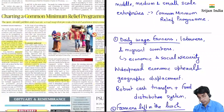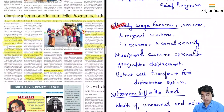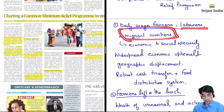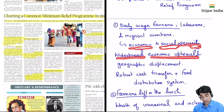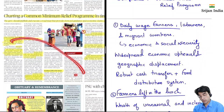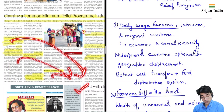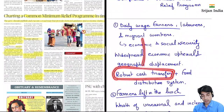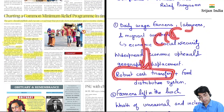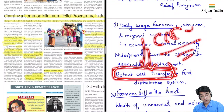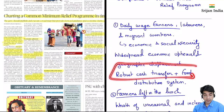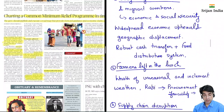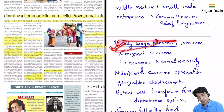Ek hai daily wage earners, laborers, aur migrant workers — yeh economically itne sound nahi hote aur social security bhi inke paas nahi hoti. So widespread economic upheaval and geographical displacement ho raha hai — Delhi se yeh log apne hinterland mein displace ho gaye. Robust cash transfer ki zarurat hai — ham trinity ke through inke account mein kuch ek paisa transfer karein. Food distribution system ko hum zyada achha banayein. Toh yeh kaam karna hoga hume daily wage earners ke liye.